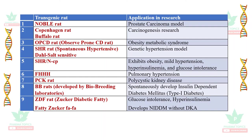The next category is transgenic rats. The Noble rat is a very good model for development of prostate carcinoma. Copenhagen and Buffalo rats are useful transgenic models for carcinogenesis research. The OPCD (obesity-prone CD) rat is useful for development of obesity and metabolic syndrome. Spontaneous hypertensive rats and Dahl salt-sensitive rats are genetic hypertension models.